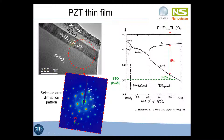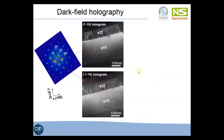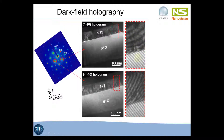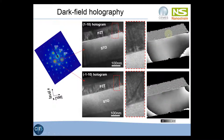A selected area diffraction pattern of this region shows that the spots are split along the growth direction, meaning the C parameter is mainly in the growth direction — so the main domains should be C domains. These are two dark-field electron holograms obtained using 110 diffracted spots, which are more intense and give better contrast. The fringe spacing is larger in the PZT layer compared to the STO substrate because the PZT lattice parameter is larger. There is also a rupture of the fringes due to a small A domain. These are the phase maps reconstructed by Fourier processing, which contain a lot of structural information.